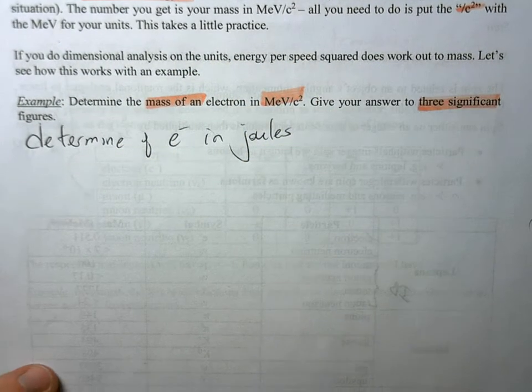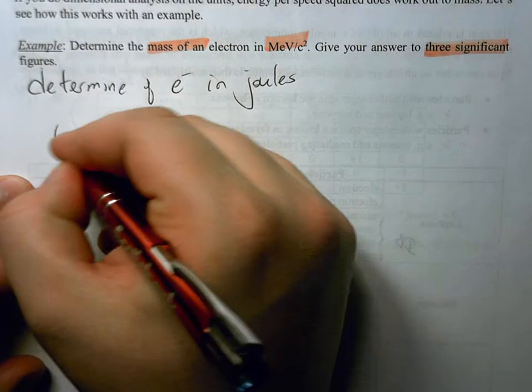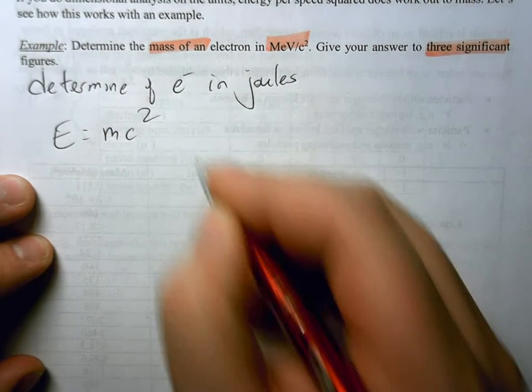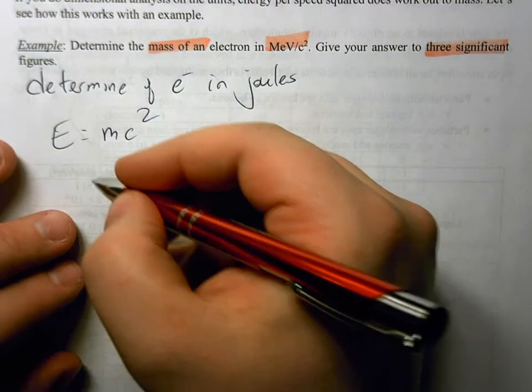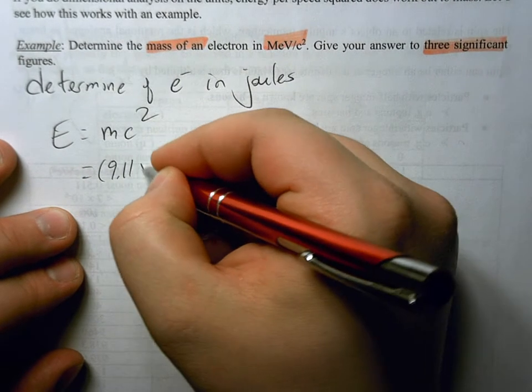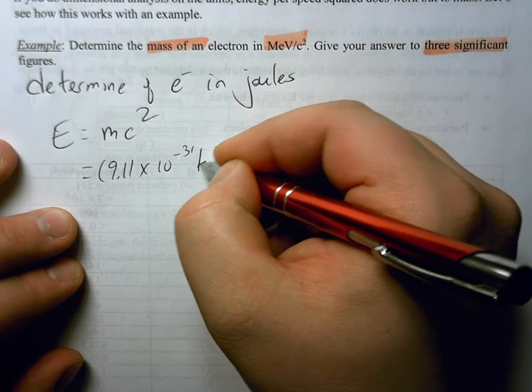And to do this, we're going to get a little help from our friend Einstein, because we know that E is equal to mc squared. So we know the mass of our electron, 9.11 times 10 to the minus 31 kilos.